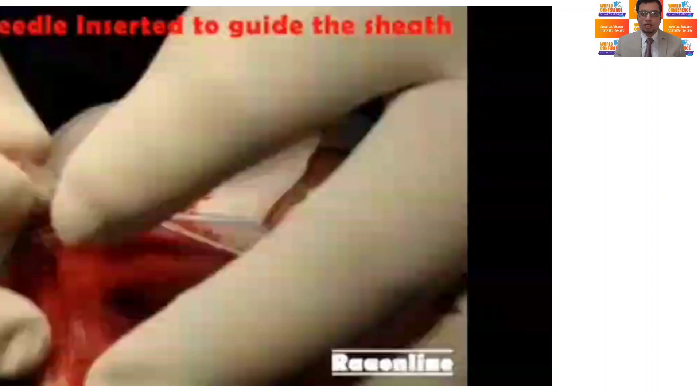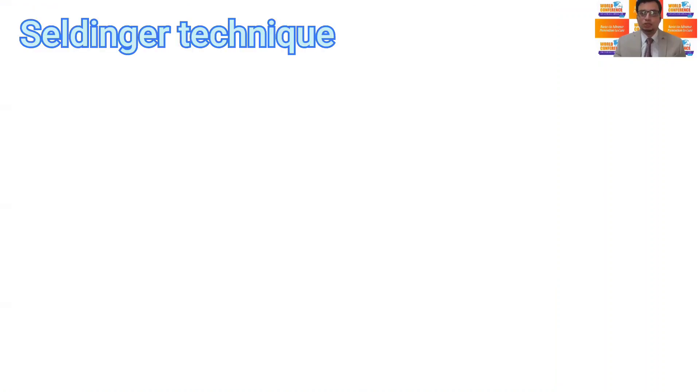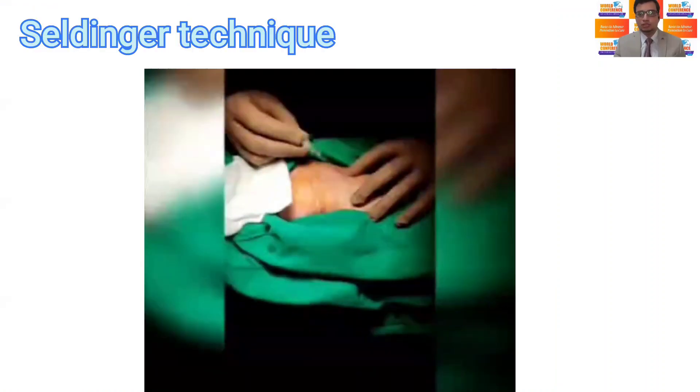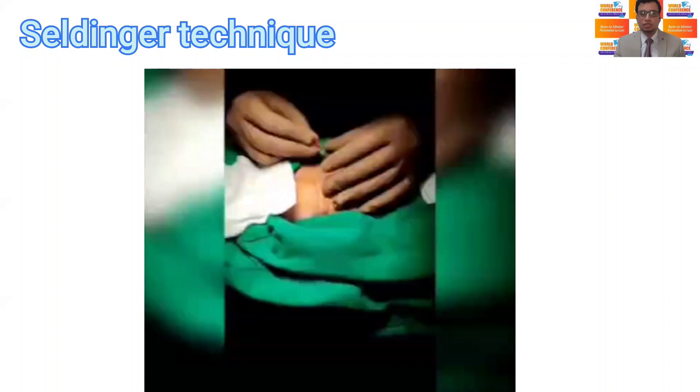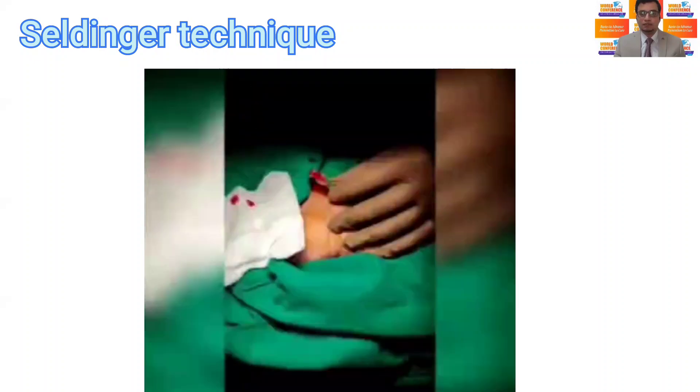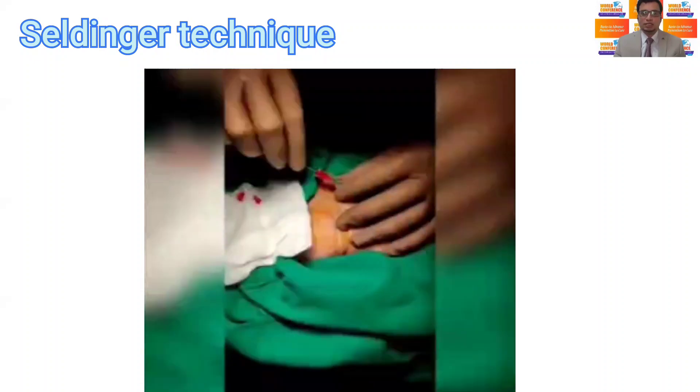In over-the-wire or Seldinger technique, initially insert the introducer needle without catheter into the artery. Once pulsatile blood flow is obtained, advance the guidewire through the needle and finally thread the arterial catheter over the guidewire.